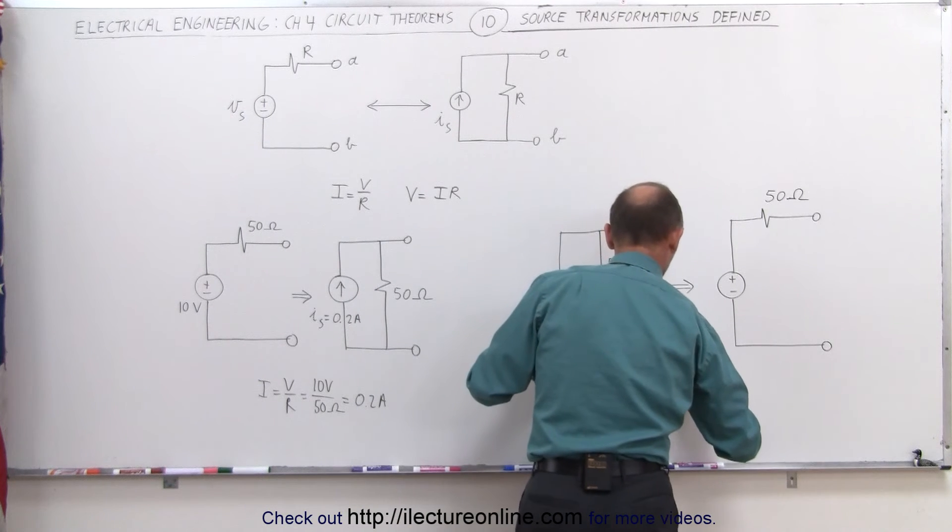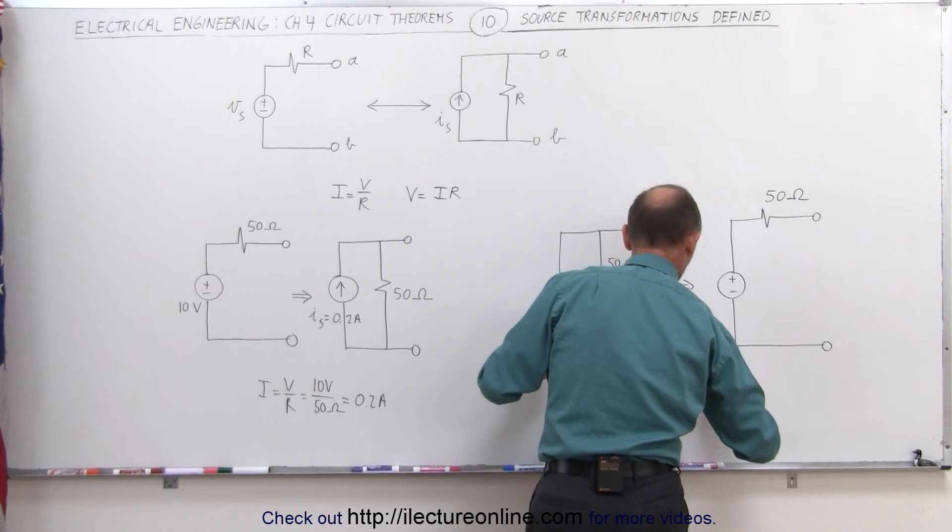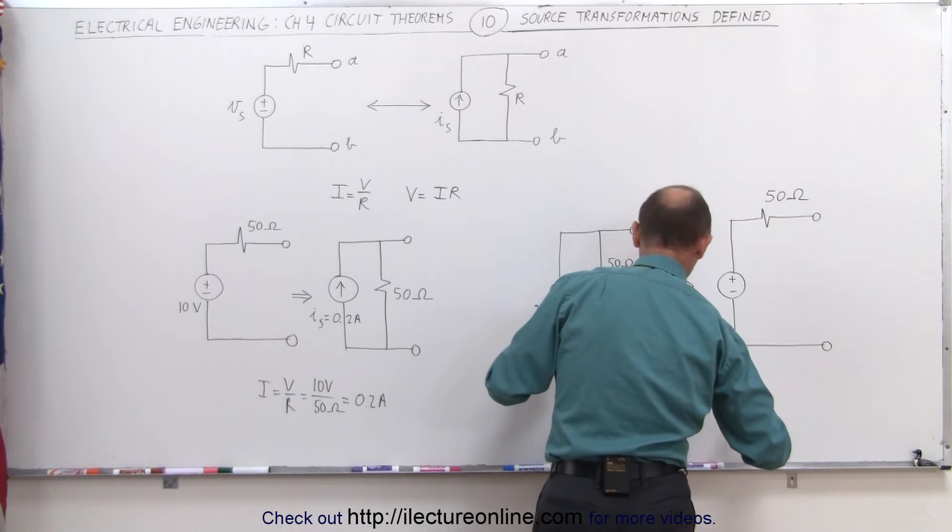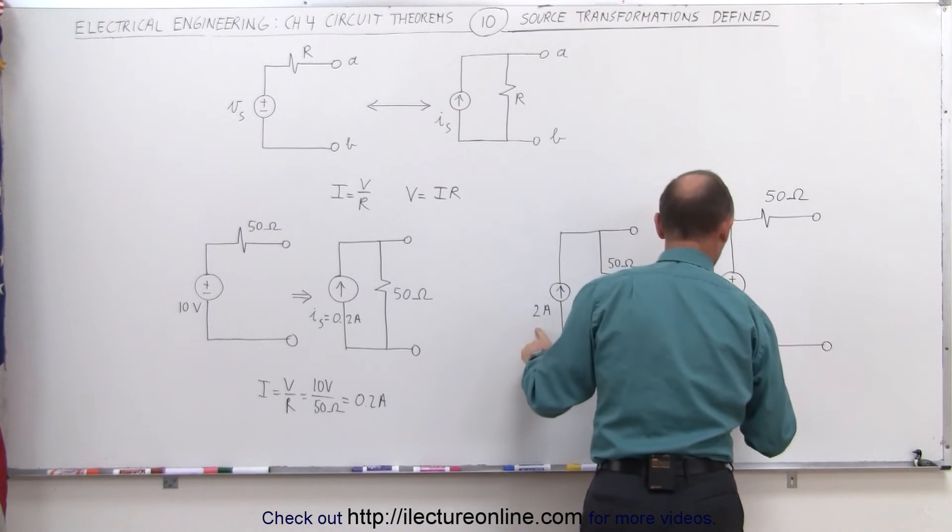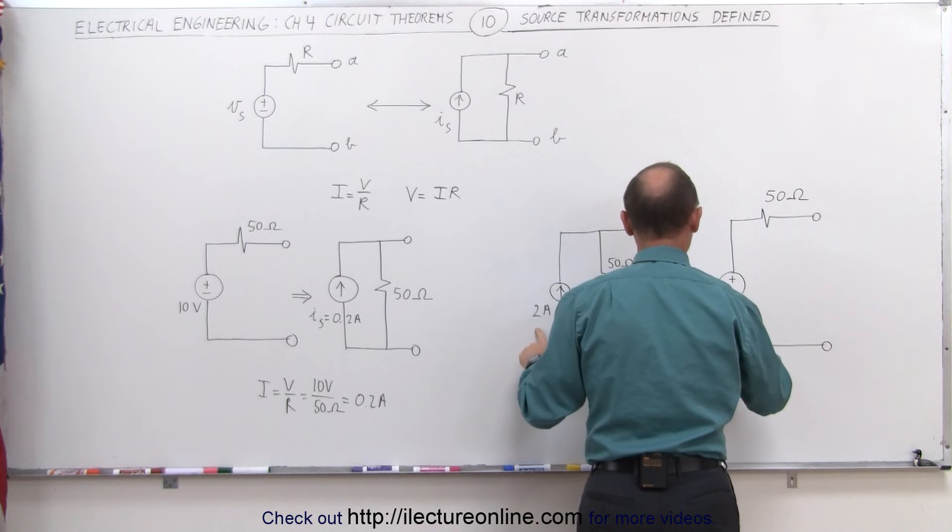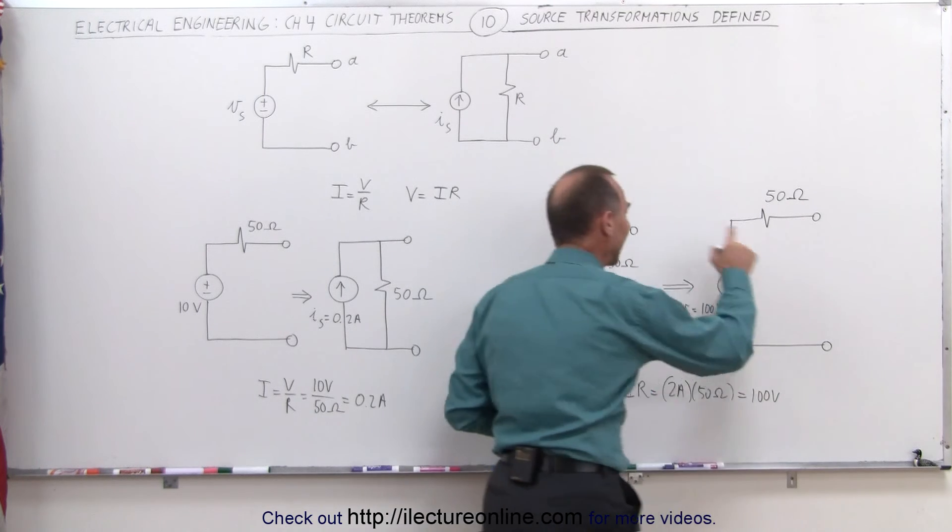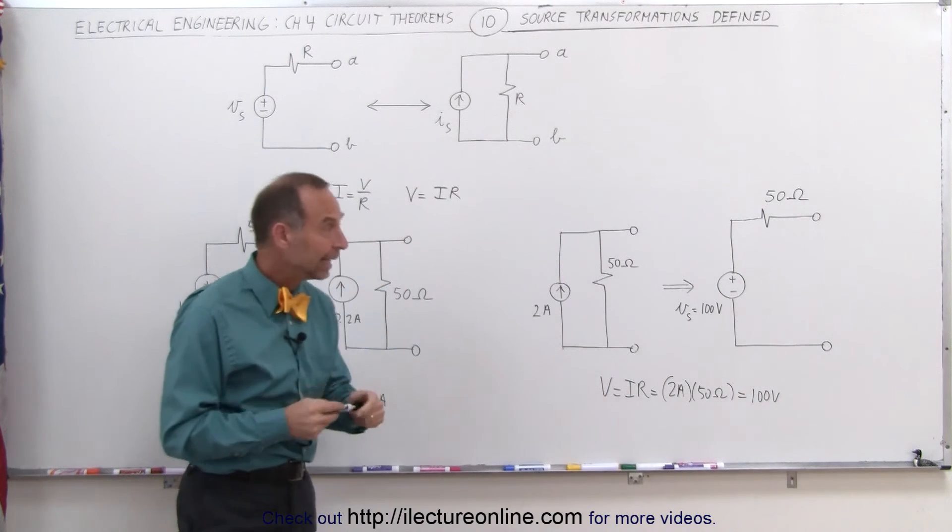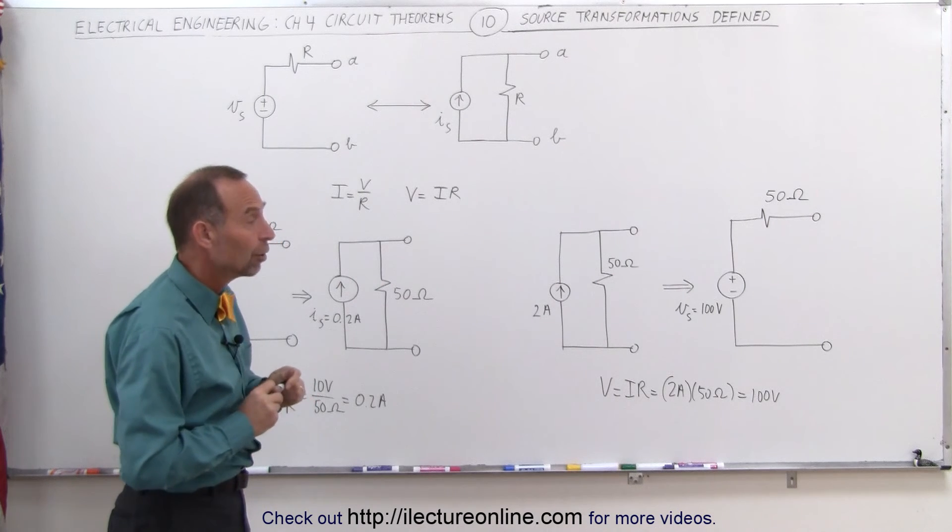I is equal to 2 amps. R is equal to 50 ohms. And therefore, we get 100 volts with a 2 amp source that transforms into a 100 volt source. V of the source, 100 volts. And the resistor in series is 50 ohms.